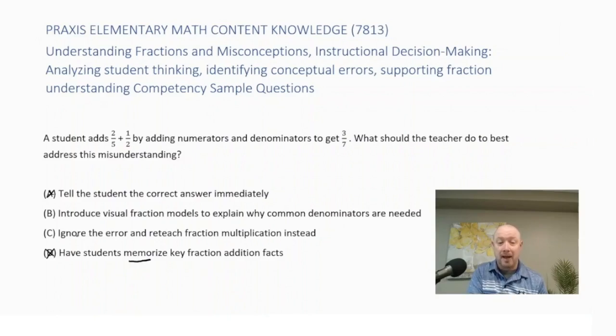Again, choice C is a bad answer because we don't want to ignore the error and reteach fraction multiplication. Instead, we're moving on and we're ignoring the problems that the student's having. So we eliminate C. So the correct answer here would be B, introduce visual fraction models to explain why common denominators are needed.